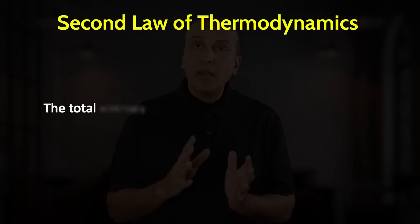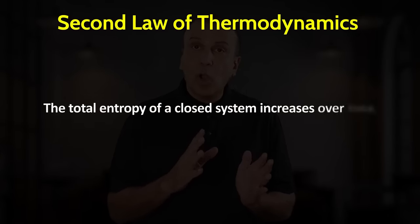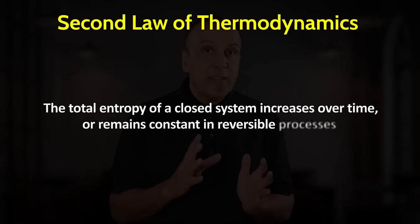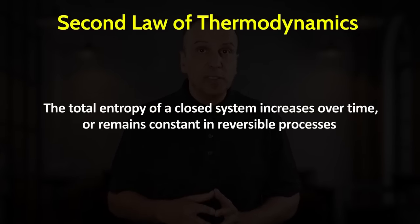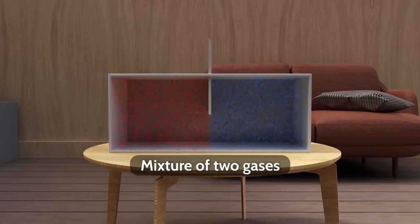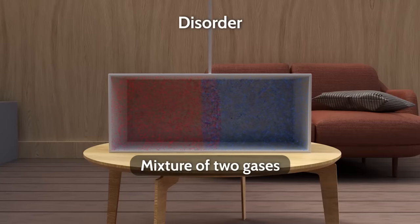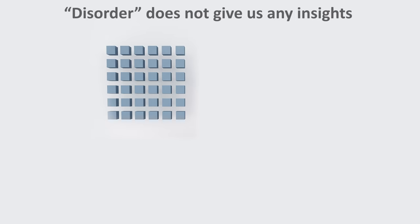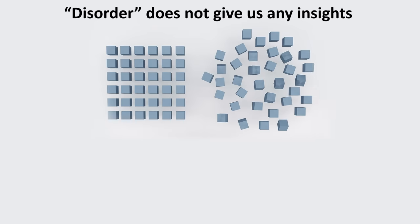The second law of thermodynamics states that the total entropy of a closed system always increases over time or remains the same in reversible processes. But what is entropy? The way entropy is typically described is disorder. Higher entropy means higher disorder. Well, this is a very simplified way to think of it. This description doesn't really give us many insights. Why should the universe favor disorder over order? The answer is not obvious.